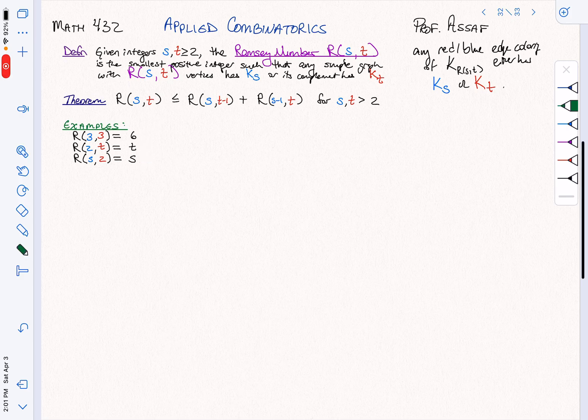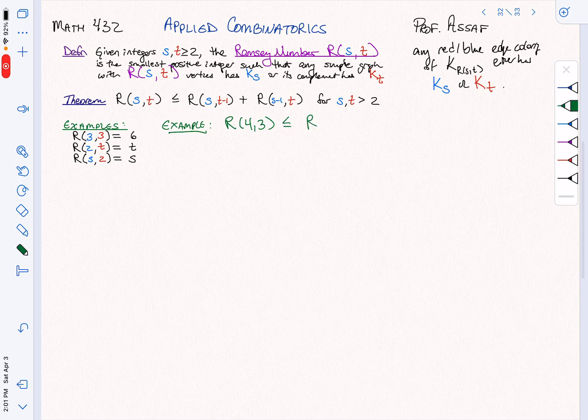What's the smallest case that we haven't done? The smallest case that we haven't yet done that we could maybe explore is the case of R(4,3). What is R(4,3)? We can use the bound. This is at most R(4,2) plus R(3,3). The great thing about doing the next case you haven't done is that when you use this bound, you know what these numbers are.